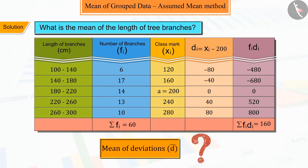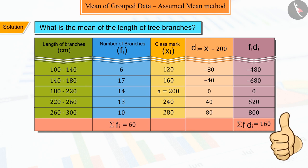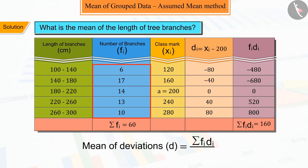So, can you find the mean of the deviations? Correct. To find the mean of the deviations, the sum of the product fi·di is divided by fi. But you must remember that to find di, we subtracted a from each xi.